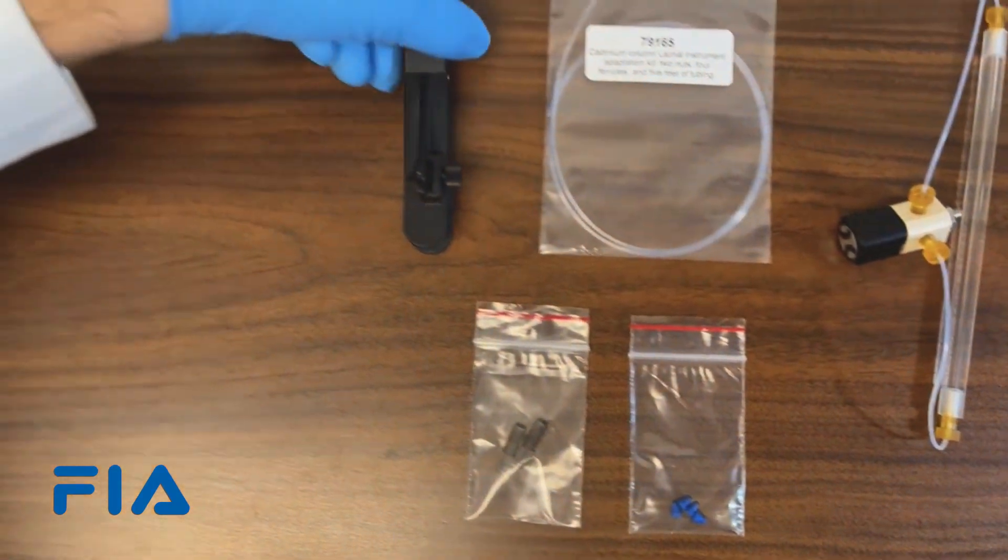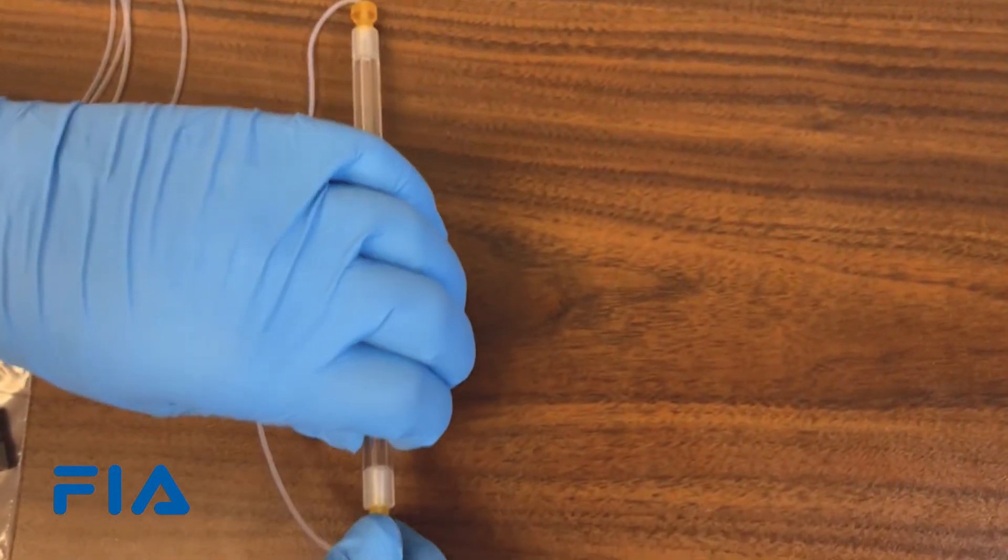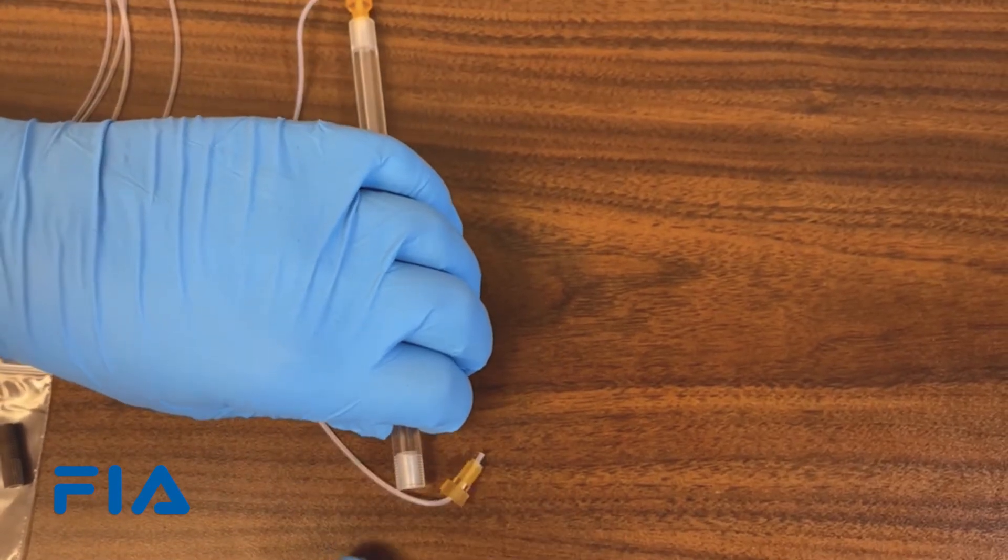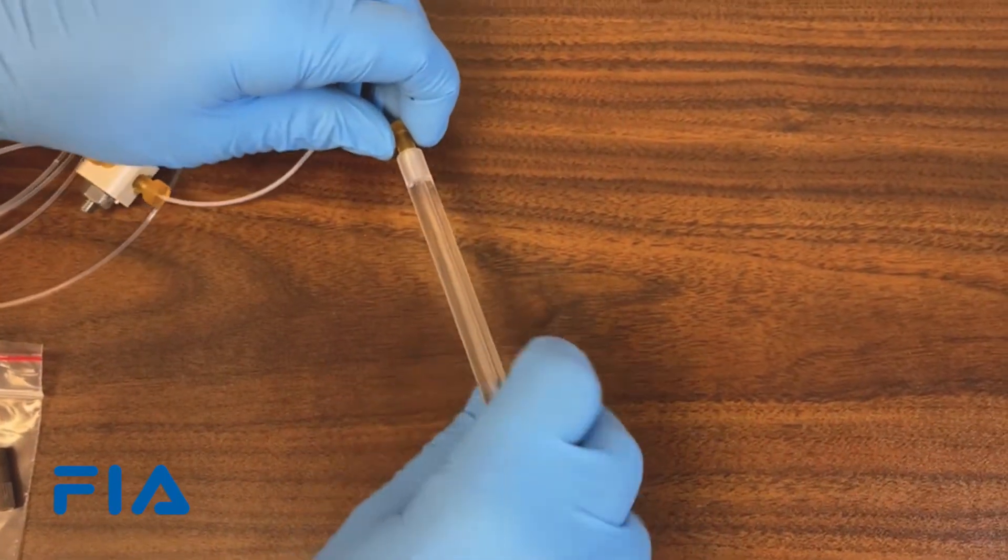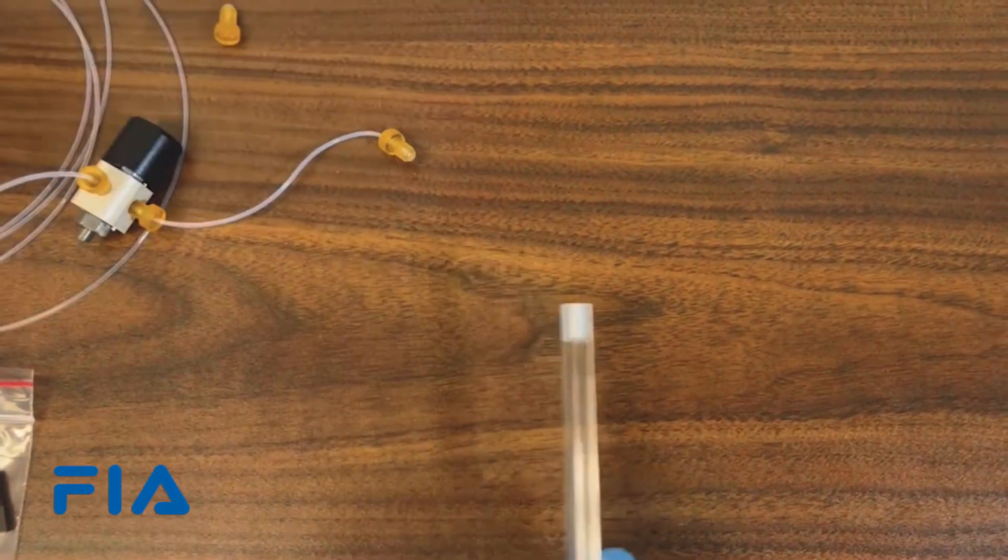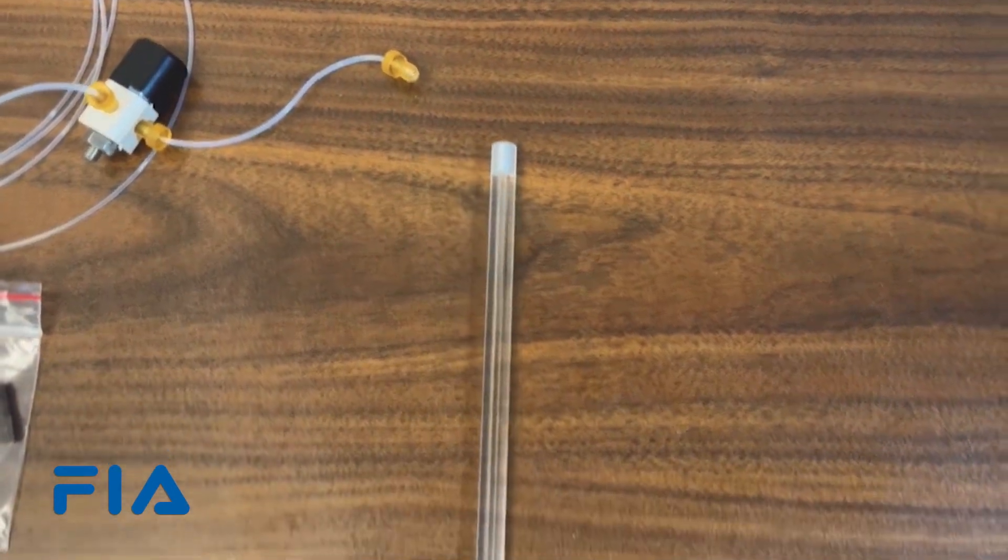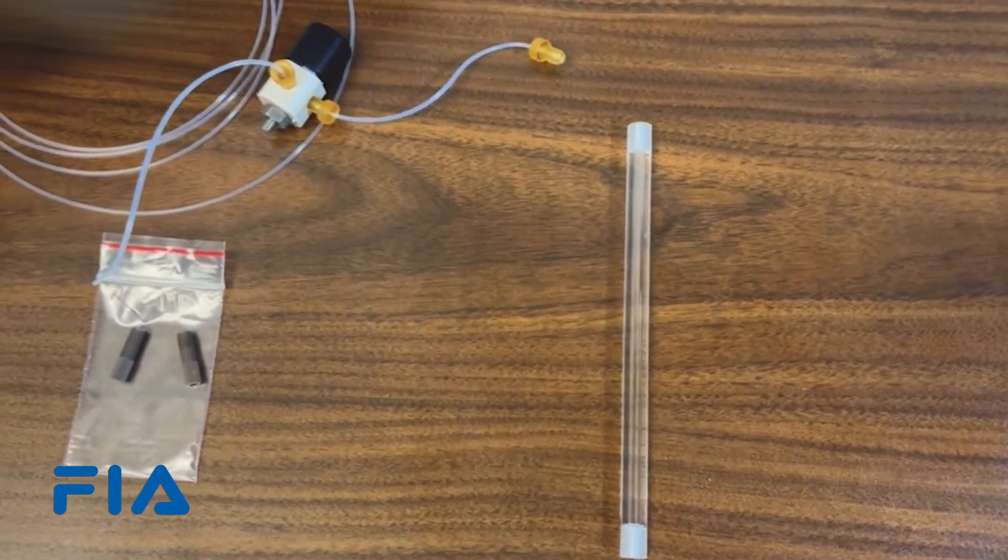You will also require a tubing cutter. First, remove two connections from the switching valve that go onto the Latchet cadmium column. This tubing will be discarded, but keep it for now.